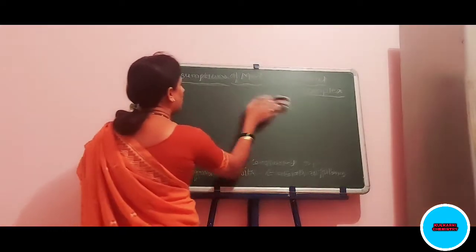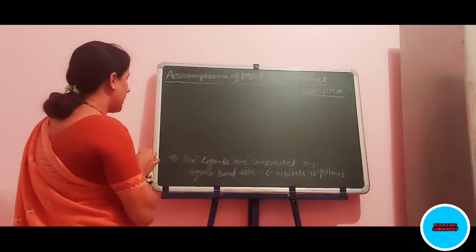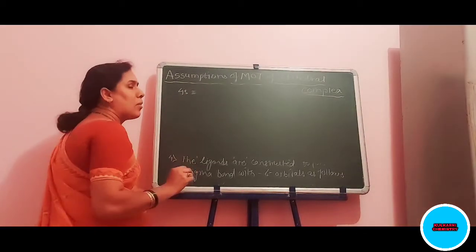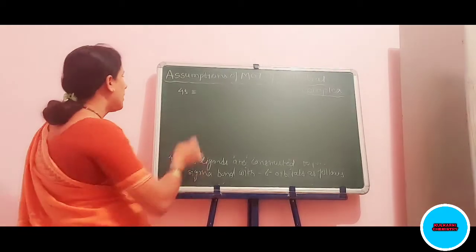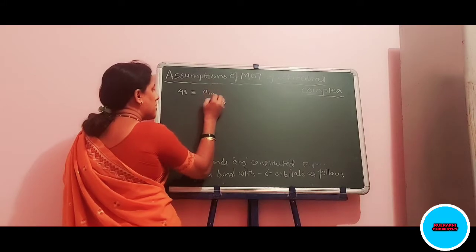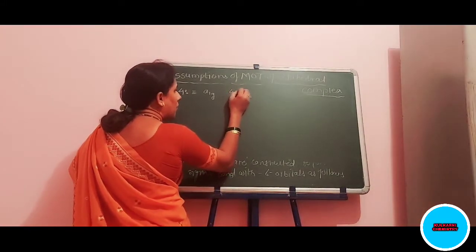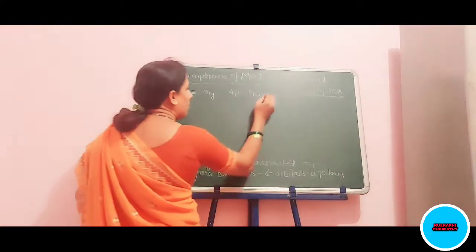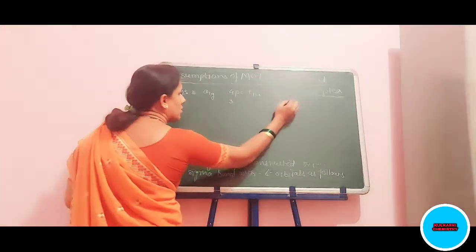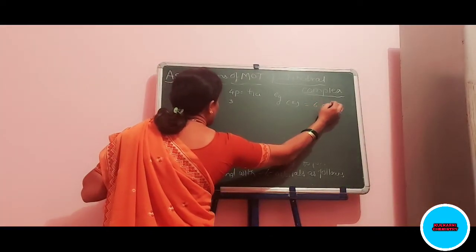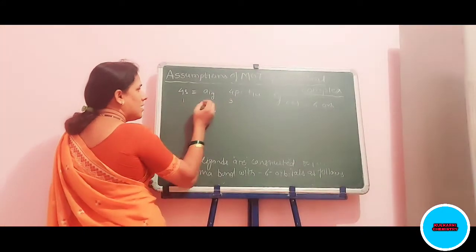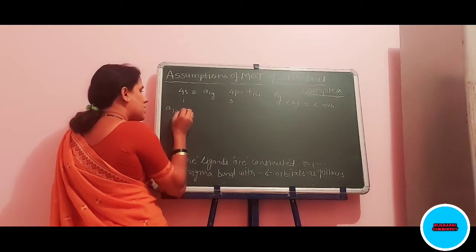These orbitals are constructed according to classical group theory. The designation for 4S is A1G, for 4P it is T1U, and for the EG orbitals it remains as EG. That gives 1 orbital for A1G, 3 orbitals for T1U, and 2 orbitals for EG — total 6 orbitals. The mathematical form is as follows. The A1G symmetry orbital is equal to a summation with 1 over root 6.